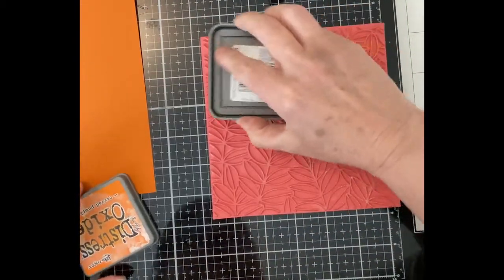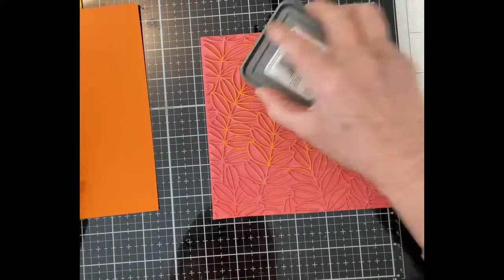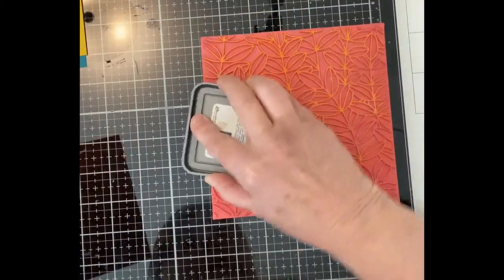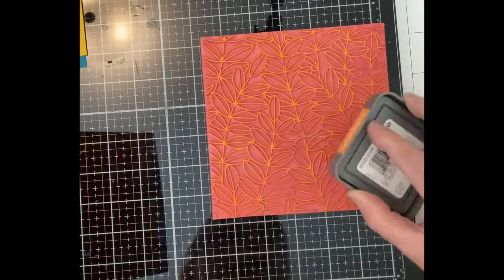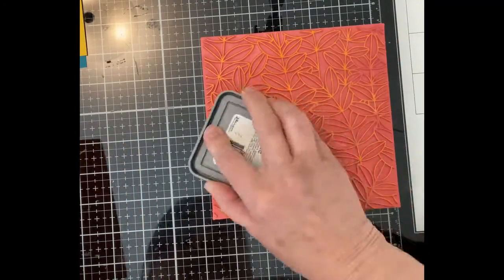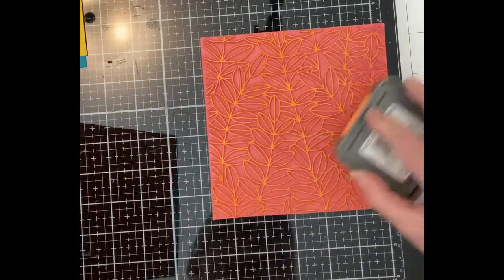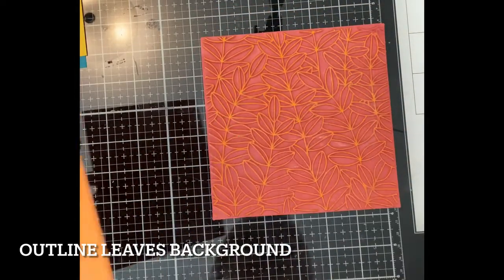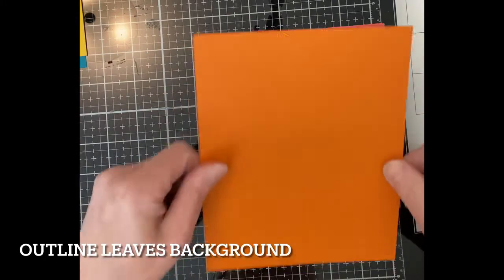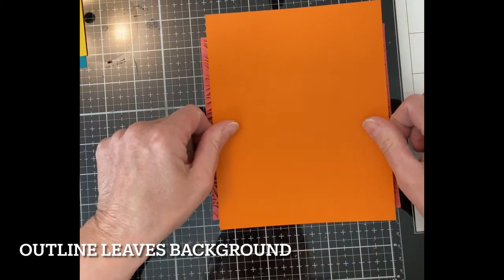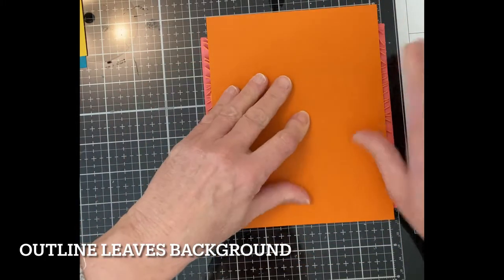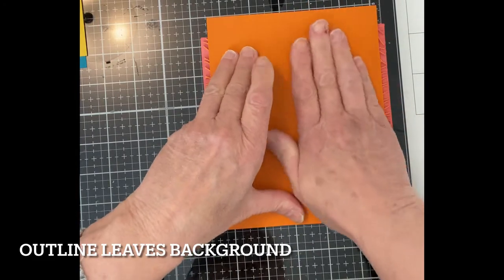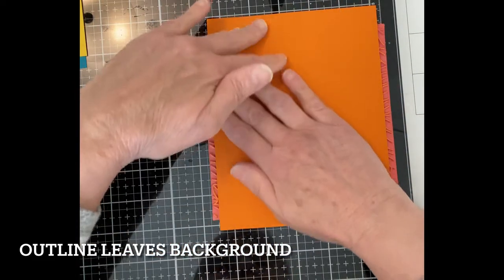I chose Distress Oxides that were a fairly close match to the paper. I'm working with Carved Pumpkin, Peacock Feathers, and Fossilized Amber. The red rubber stamp, Simon Says Stamp's Outline Leaves Background, was placed directly on my glass media mat. The stamp holds securely and there's no need to worry about any slippage.